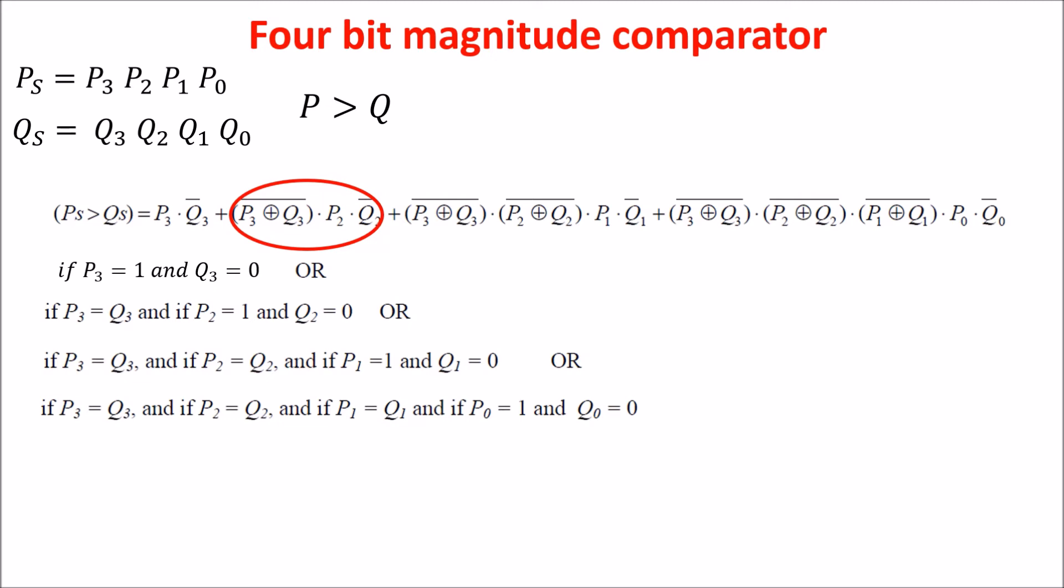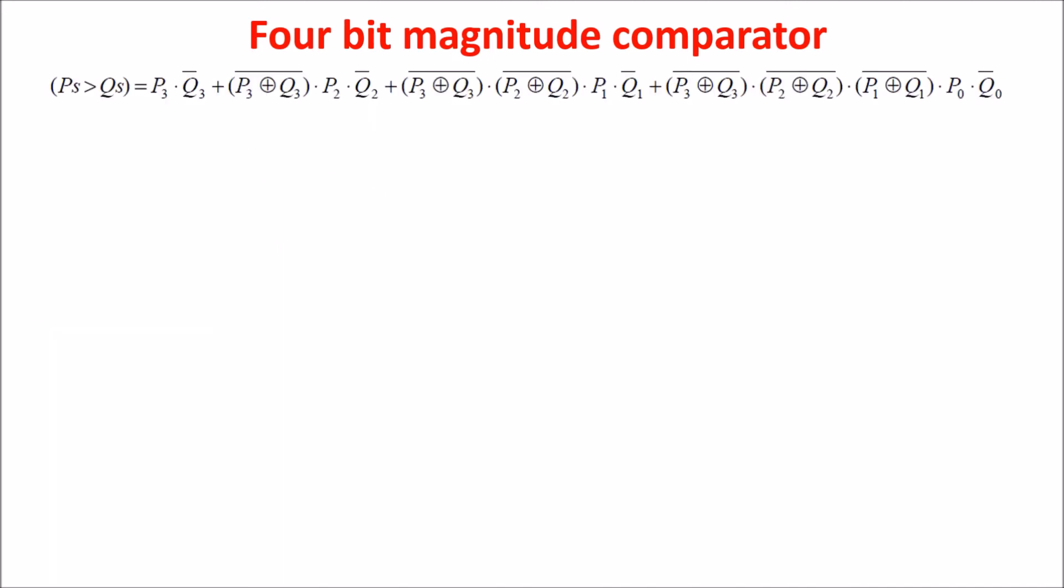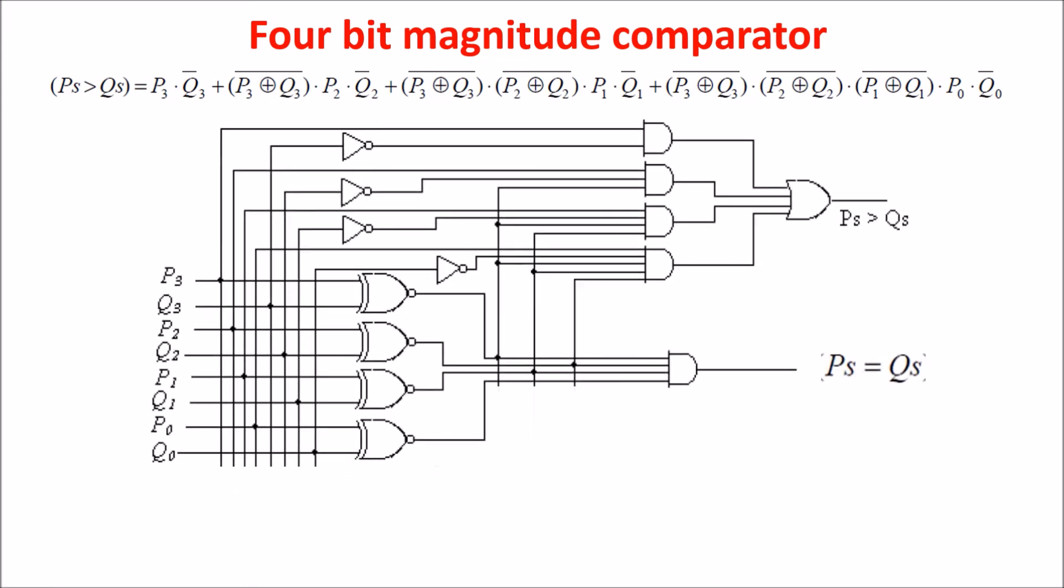So this equation represents the circuit we should build. So now we have to build the circuit. It is not difficult because we know that where we see a plus sign we use an OR gate. Where we see a product we use an AND gate and we recognize the XNOR.